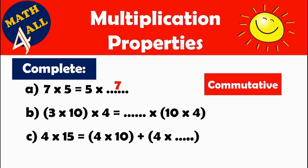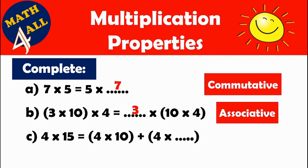Example B: 3 by 10 by 4 equals blank by 10 by 4. The missing number is 3. What is this property? When you have to multiply three digits, it is called the associative property — changing the grouping of factors doesn't change the product. So 3 by 10 equals 30, by 4 equals 120; it's the same as 10 by 4 equals 40, by 3 equals 120.